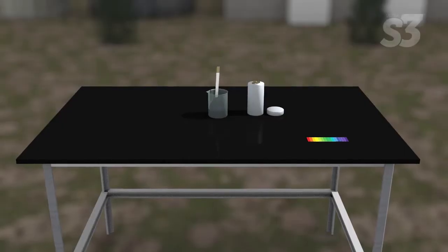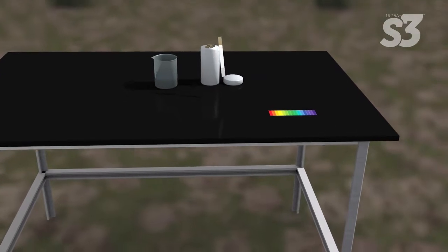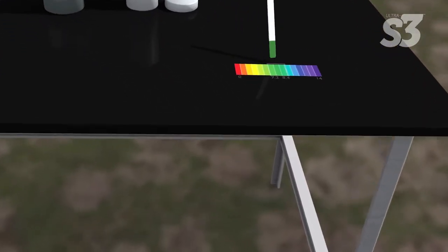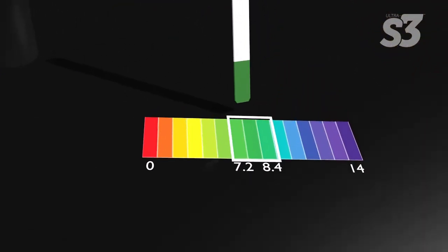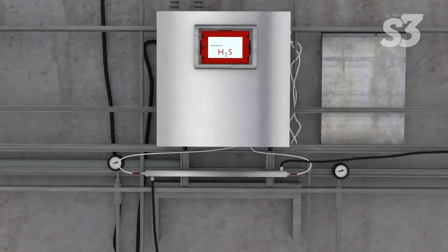The first step in using Ultra S3 is to test the pH of the water it will be used with. For optimal results, the water must have a neutral pH of 7.2 to 8.4.